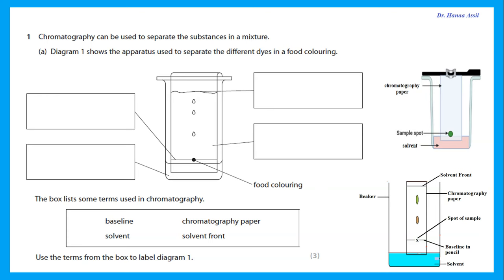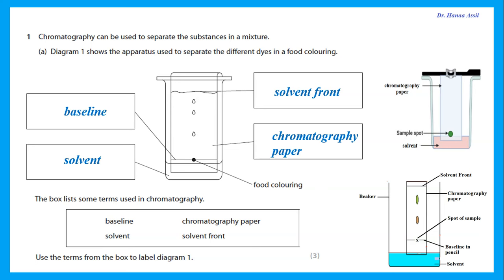From this diagram, the first label on the left is the baseline — a line drawn in pencil on the paper to determine where the spot started from. This is where we put the spot of the sample, and we put the paper into a beaker containing a small amount of solvent. Notice that the solvent does not go up to the baseline; it has to be below the baseline. Then we leave this until the solvent moves up to the top of the paper — that is called the solvent front — and of course, this is a chromatography paper.